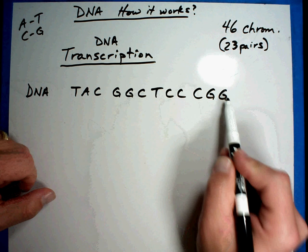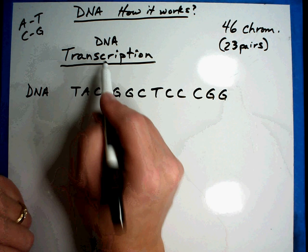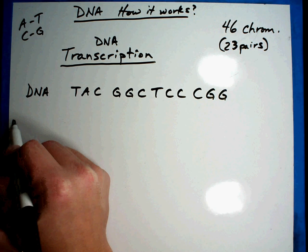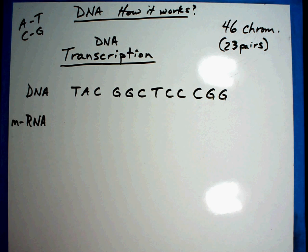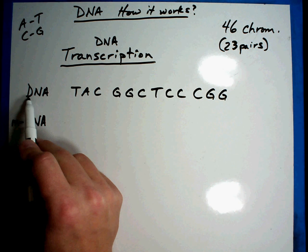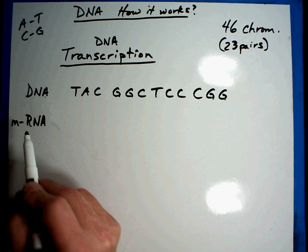Now what we're going to do first in transcription is make a piece of what is called messenger RNA, or mRNA. This is a little bit different. You'll notice that this one says DNA - deoxyribonucleic acid - and this one is RNA, just ribonucleic acid.